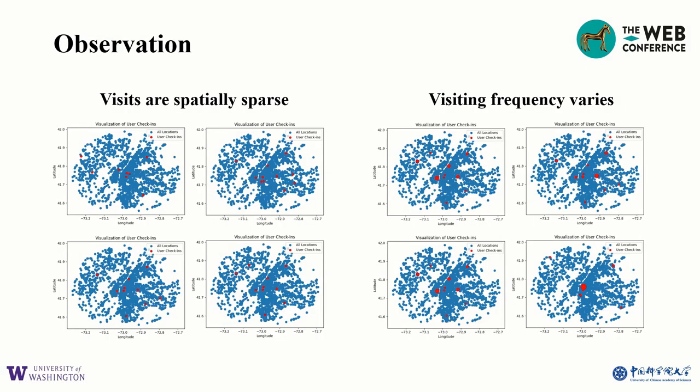However, according to the visualization of user trajectories in real-world datasets such as Foursquare, we find that most user check-ins are spatially sparse instead of spatially clustered, and the visiting sequence is fairly irregular. This could be due to the sparsity of check-in data. We also notice that the visiting frequency varies from location to location, which is rarely discussed in prior works.